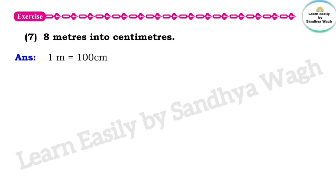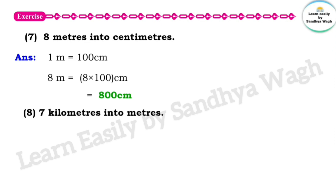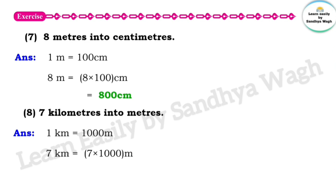Next question: 8 meters into centimeters. 1 meter is equal to 100 centimeters, so 8 multiplied by 100 centimeters is equal to 800 centimeters. Next question: 7 kilometers into meters. 1 kilometer is equal to 1000 meters, so 7 kilometers is equal to 7000 meters.